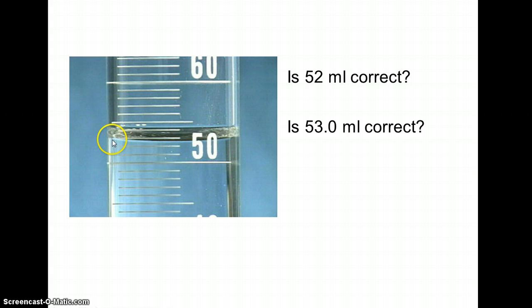How about 53? Well, if I look here at the edge, that's right on the 53. That seems tempting. But again, 53 point zero reflects the edge, not the center of the meniscus. Yes, it has the right number of decimals, but it doesn't show the center of the curve.